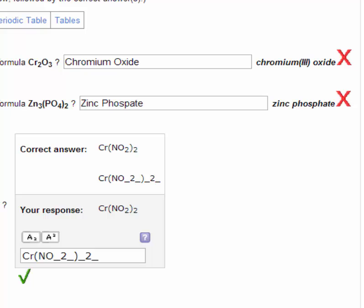Again, here's a situation where oxide, each oxide is always negative 2, and you have three of them, so that total is negative 6. So therefore, each chromium must be positive 3, because there's two of them, and those two add up to positive 6.